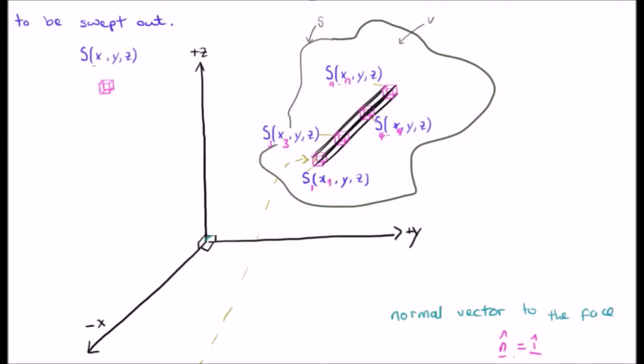Now, what we're going to consider are various cubic elements, S sub i, a function, of course, of X, Y, and Z. Because this shape which we're sweeping out here can clearly be broken down into a series of cubes, S a function of X, Y, and Z. So, let's say, for example, I have illustrated four such elements here.